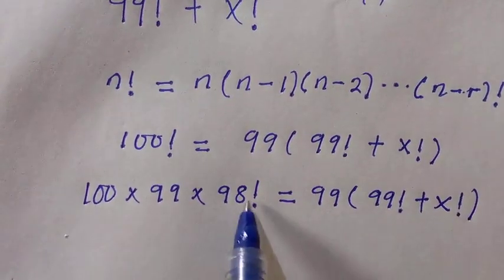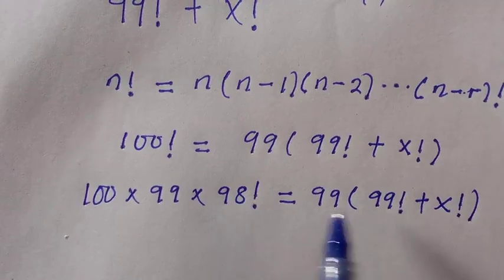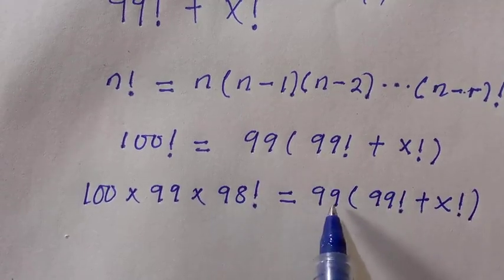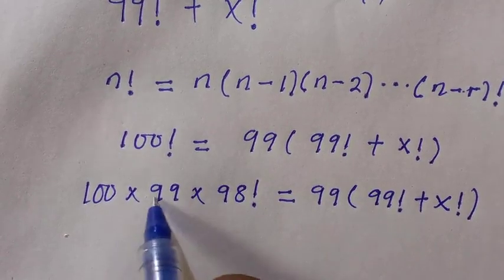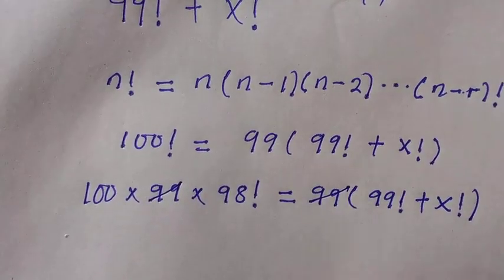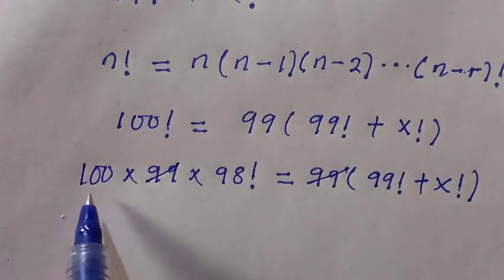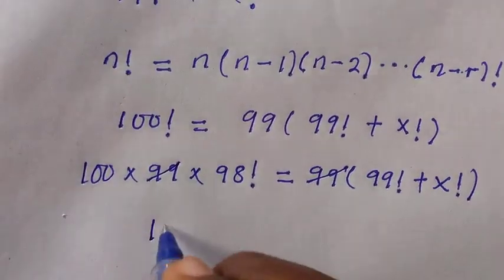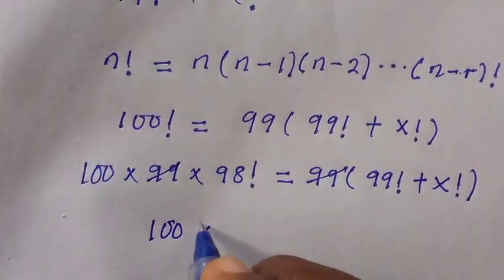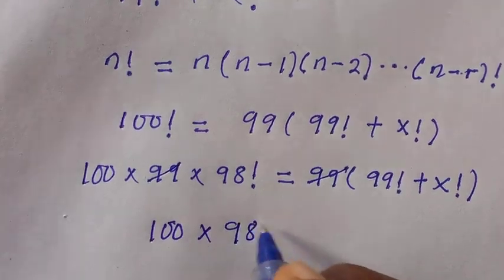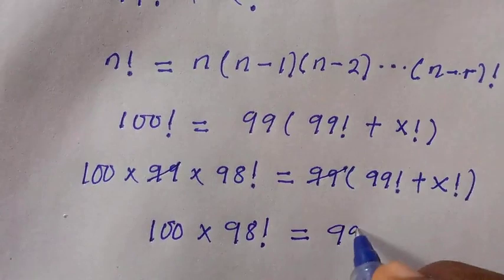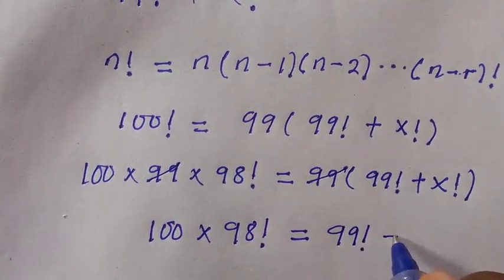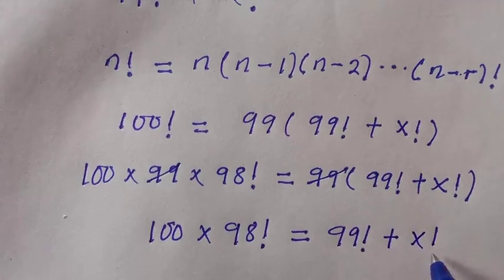I stopped at 98 factorial because looking at this side, there is 99 which can cancel this 99 at the left hand side. So if this and this cancelled each other, which means we are left with 100 multiplied by 98 factorial equals 99 factorial plus x factorial.